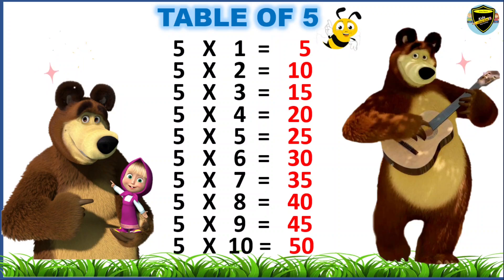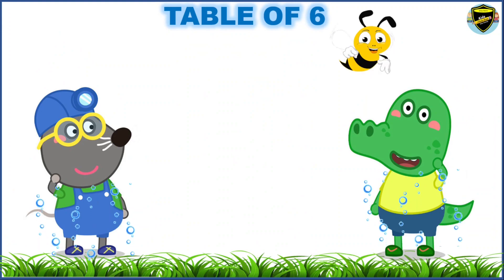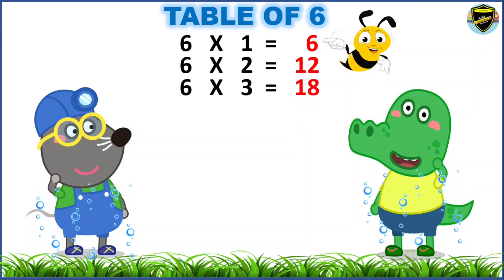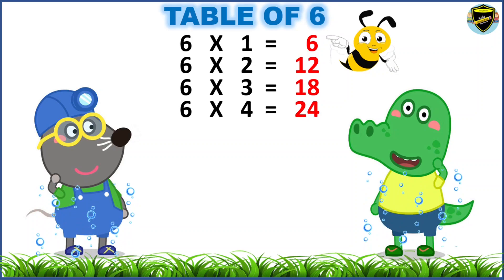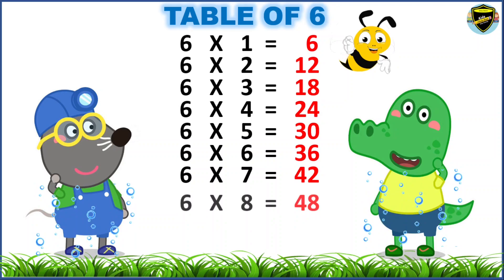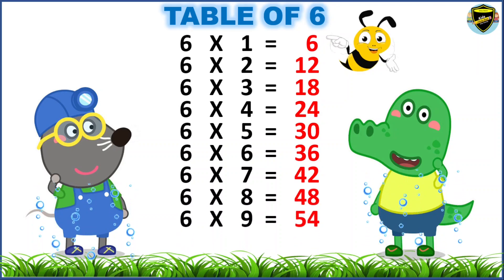Well done, children! Now, let's learn the table of 6. 6 1s are 6. 6 2s are 12. 6 3s are 18. 6 4s are 24. 6 5s are 30. 6 6s are 36. 6 7s are 42. 6 8s are 48. 6 9s are 54. 6 10s are 60.